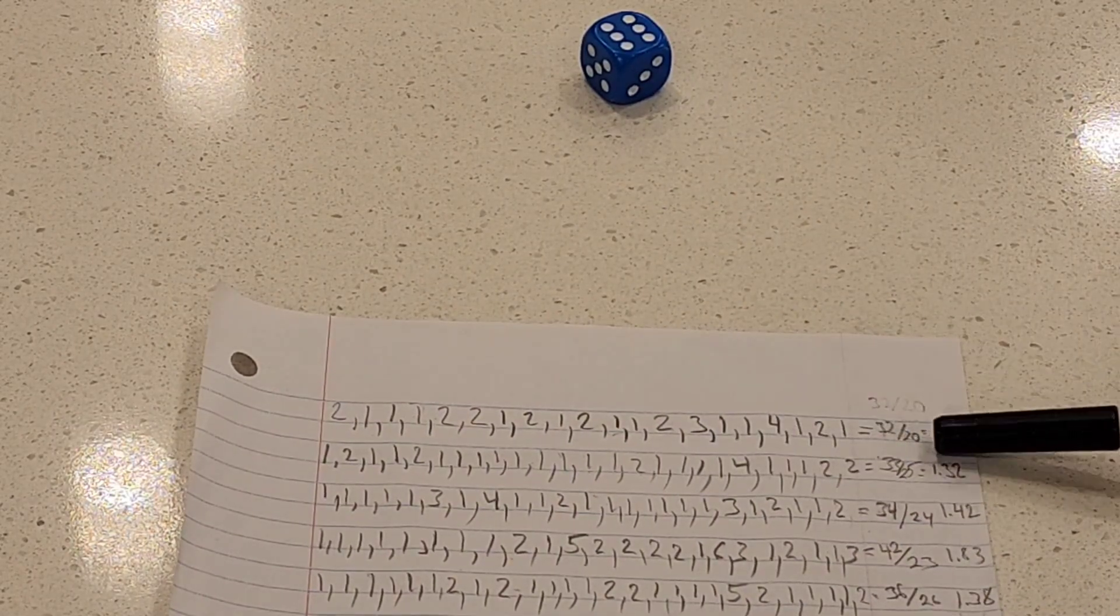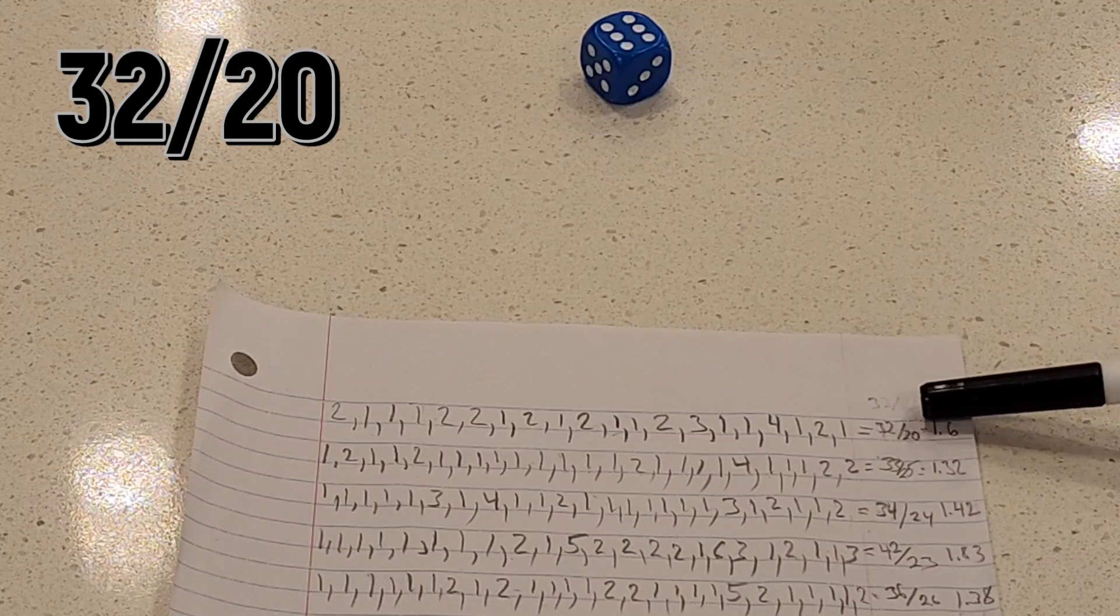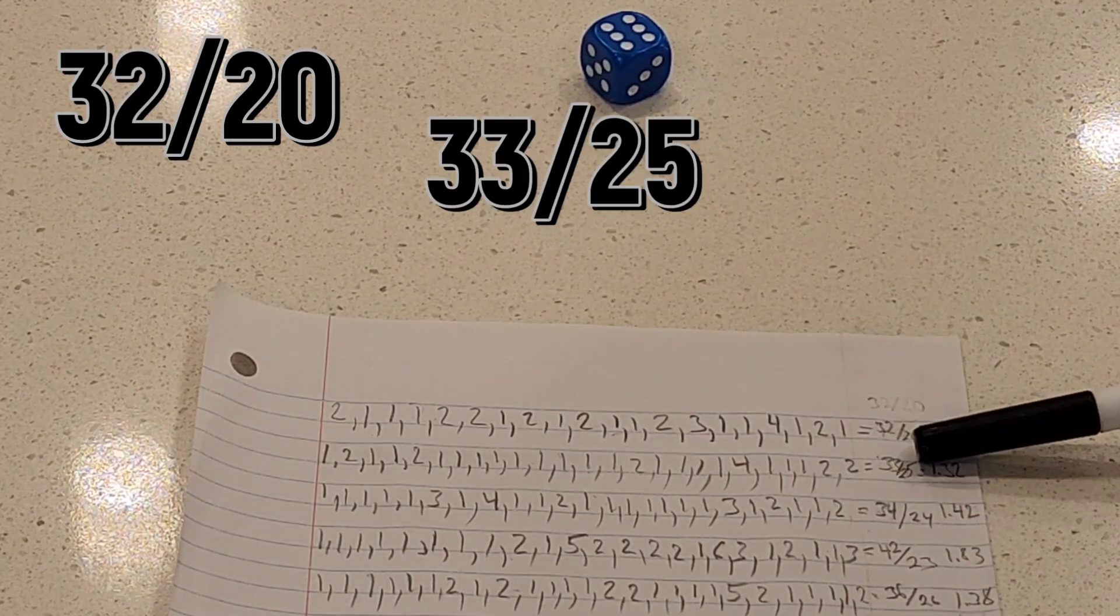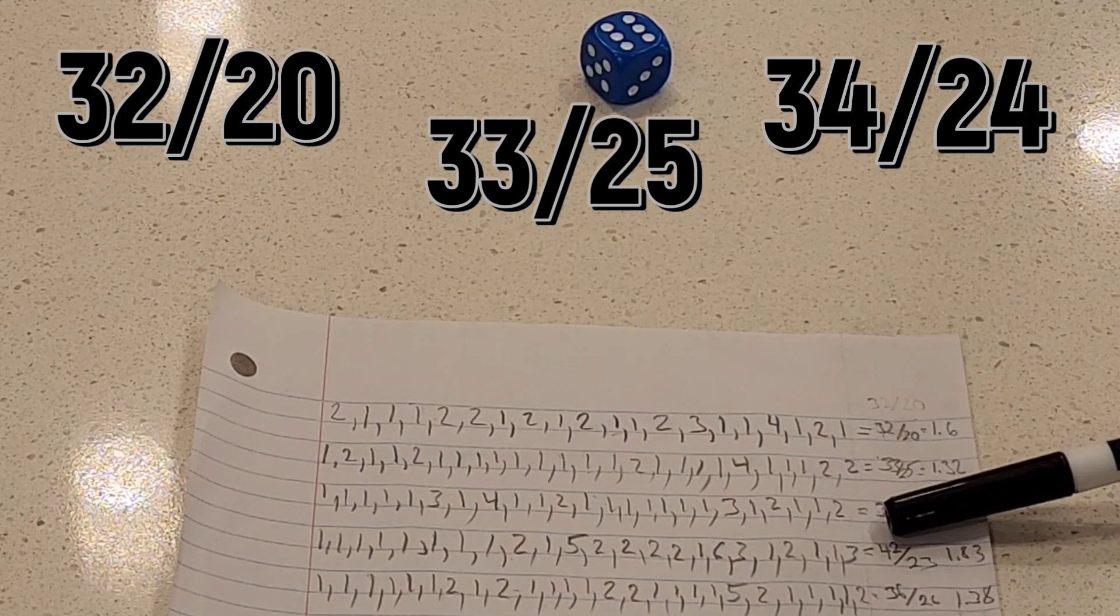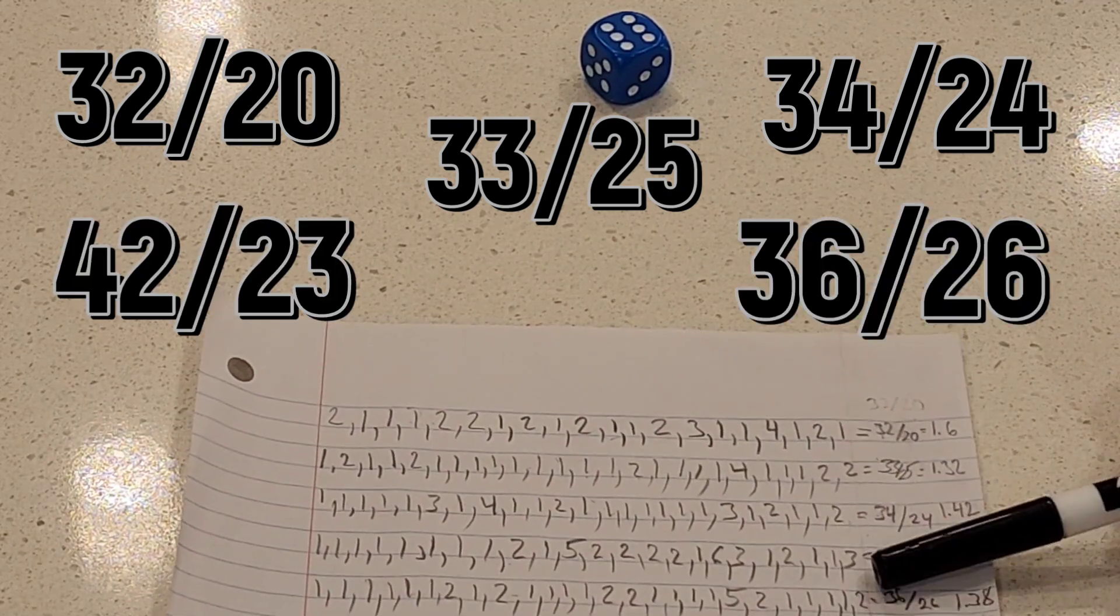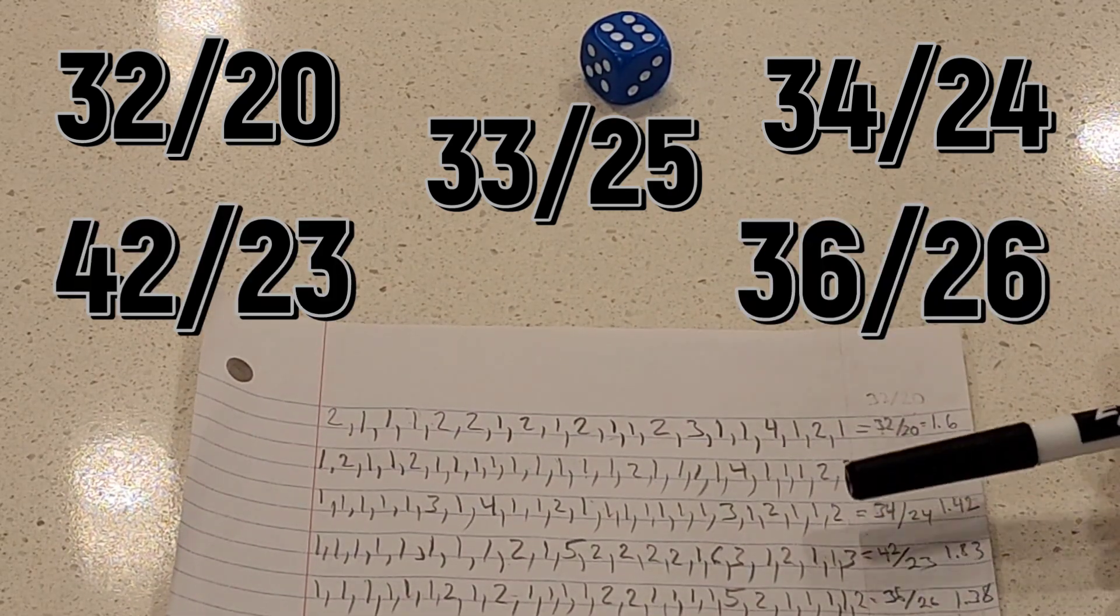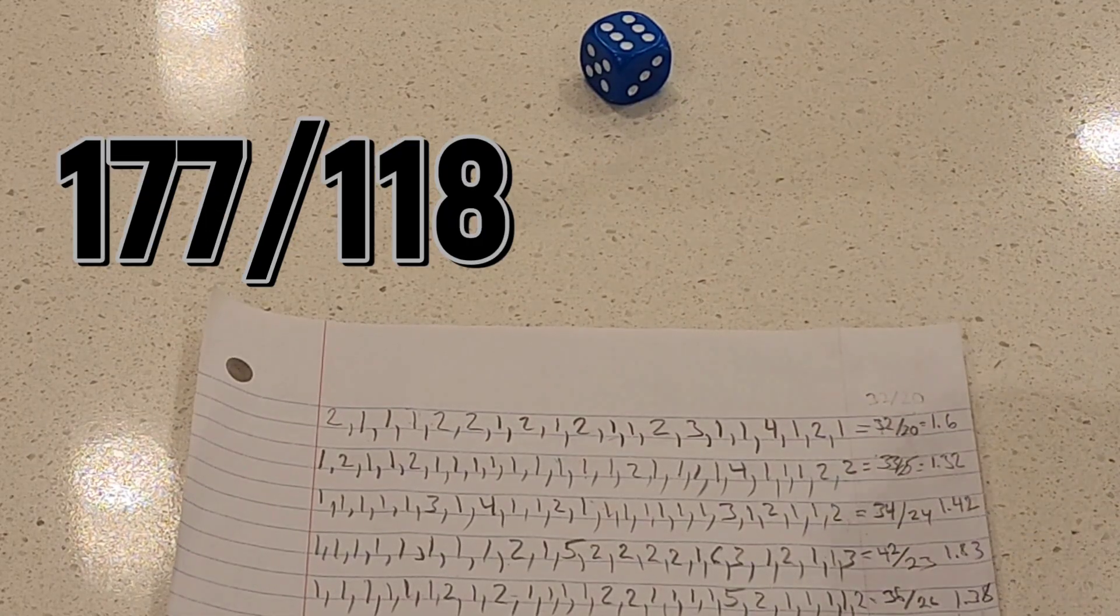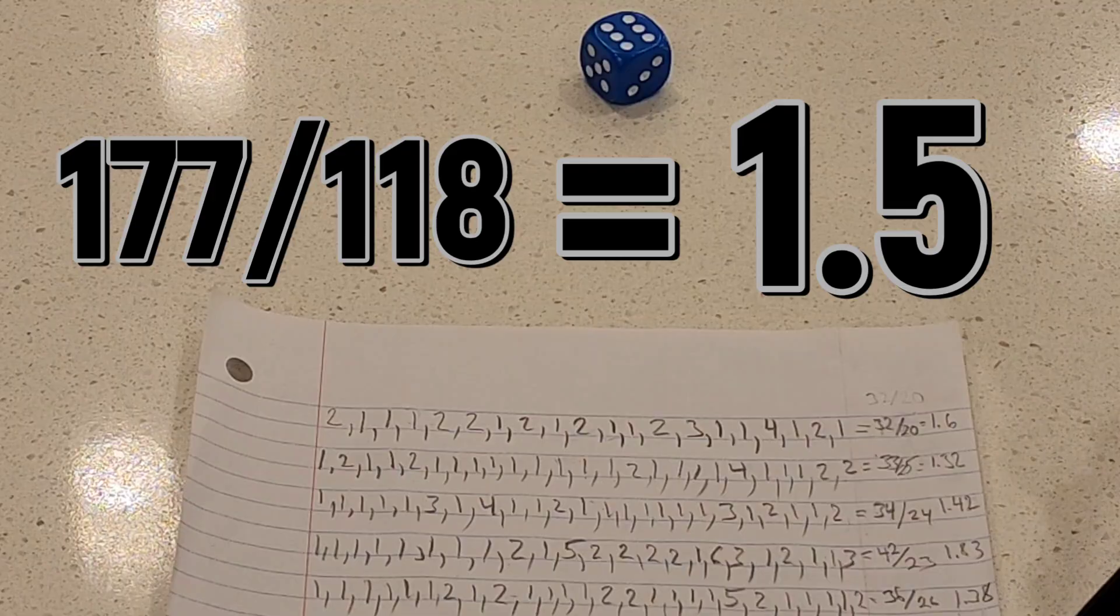So in doing that, I just filled it up and I got 32 for 20 rolls. I got a score of 33 for 25, 34 for 24, 42 for 23, 36 for 26, giving us a grand total of 177 for 118, which equals exactly 1.5.